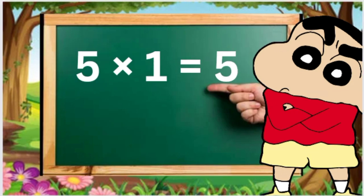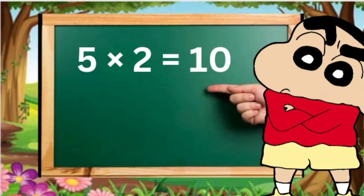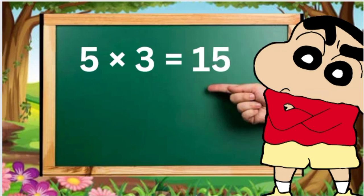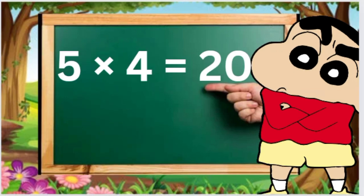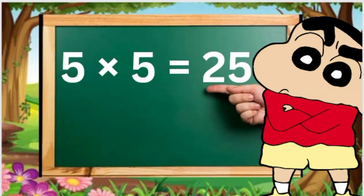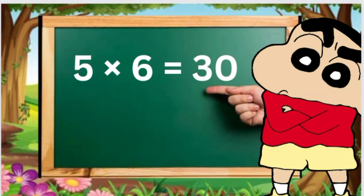5 1s are 5, 5 2s are 10, 5 3s are 15, 5 4s are 20, 5 5s are 25.